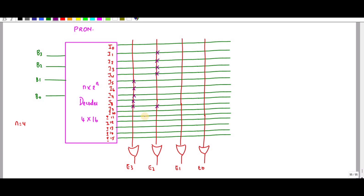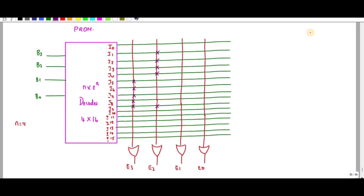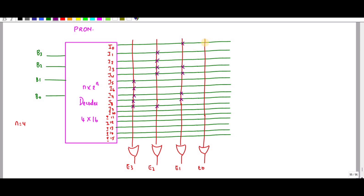For E1, the minterms are 0, 3, 4, 7, and 8. For E0, the minterms are 0, 2, 4, 6, and 8.